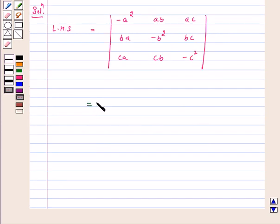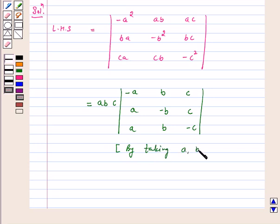It is equal to abc times the determinant with minus a, b, c; a, minus b, c; a, b, minus c. By taking abc common from r1, r2, and r3 respectively, we get this.